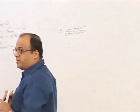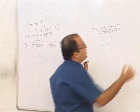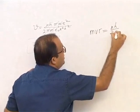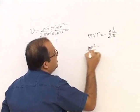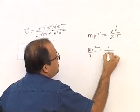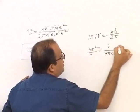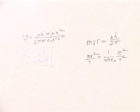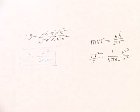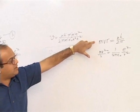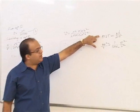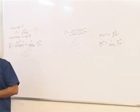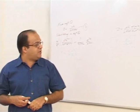We started from two basic equations: first, mvr = nh/2π, and second, mv²/r = (1/4πε₀)(e²/r²). From these two basic equations we can derive all the equations for the Bohr model. The angular momentum of the electron is quantized — it can only be integral multiples of h/2π — and the centripetal force equals the electrostatic force of attraction.